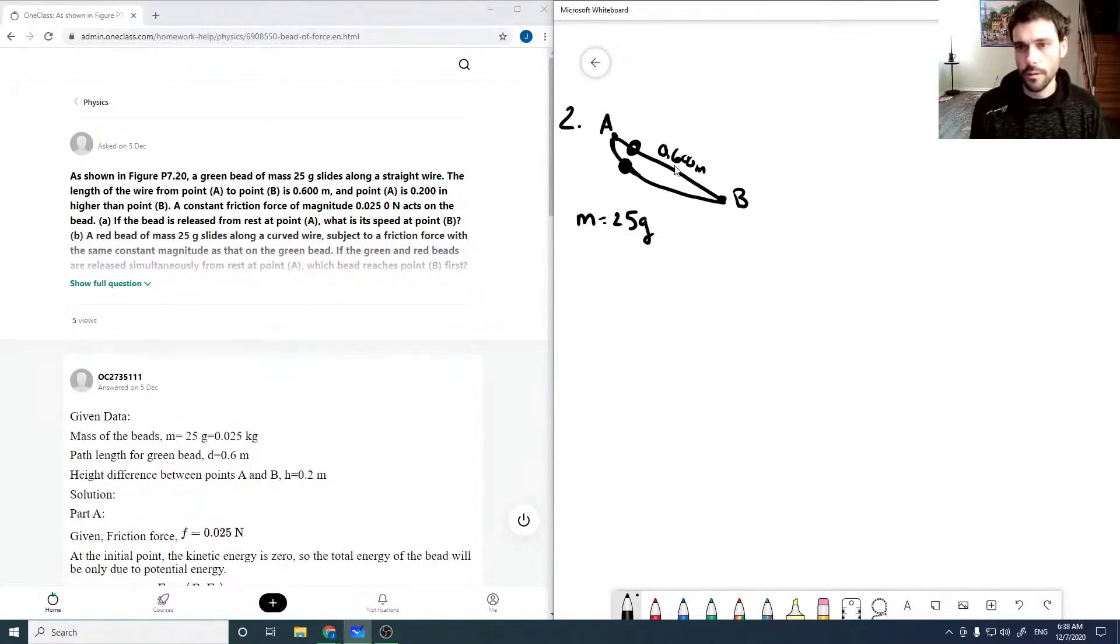The height from A to B is 0.200 meters I used, but I just realized it doesn't really say, but it must be meters. And we have a constant friction force of 0.0250 newtons.